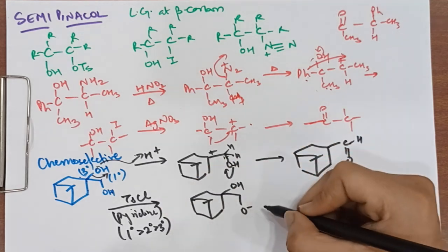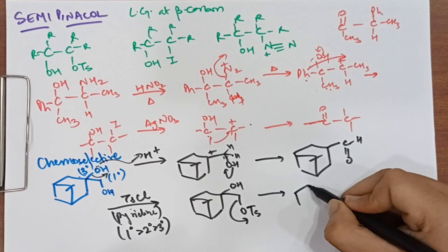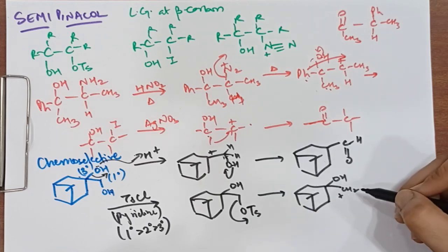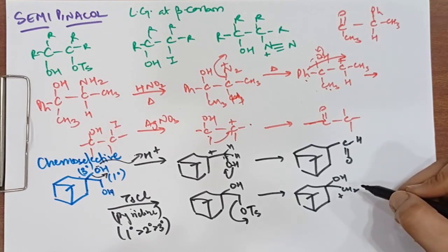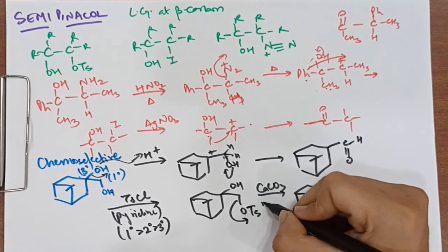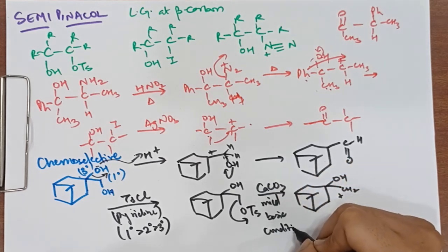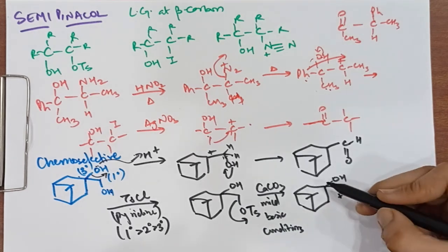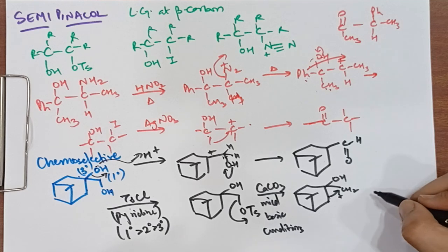This is a good leaving group, so here it will become a carbocation - our primary carbocation. So what will happen here?